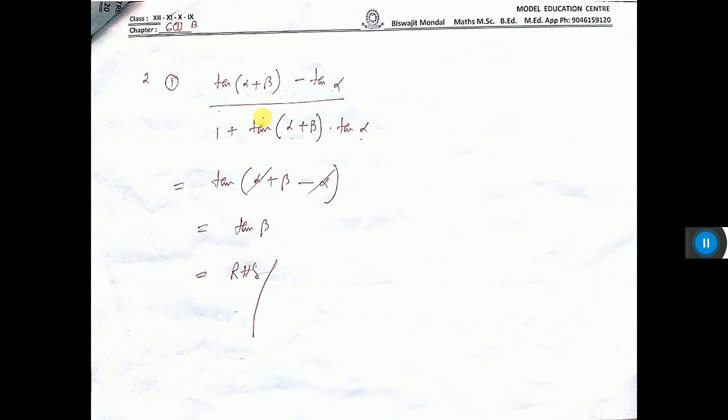Next, we have to prove that this is equal to tan β. One formula we know: tan a minus tan b. This one you consider a, this one you consider b. So tan a minus tan b by 1 plus tan a into tan b. The formula is tan(a - b). So a value I consider α plus β, and b value α. So α cancels, tan β is left. So the proof has come.